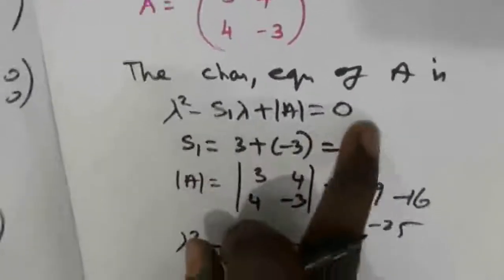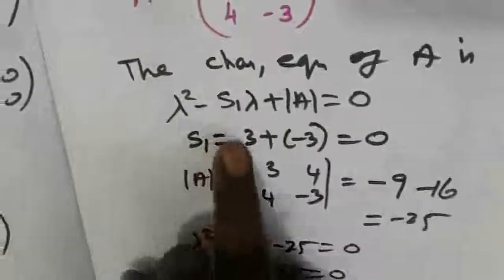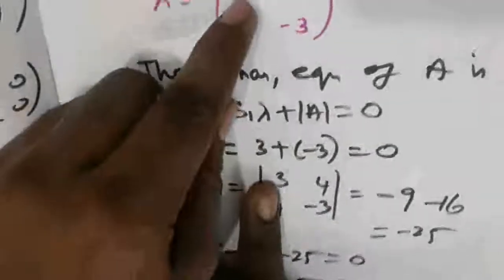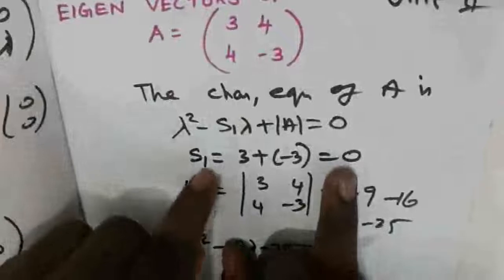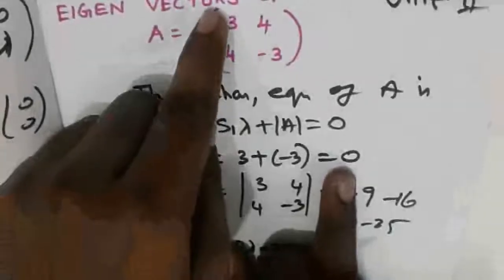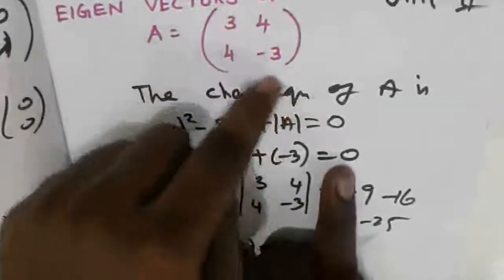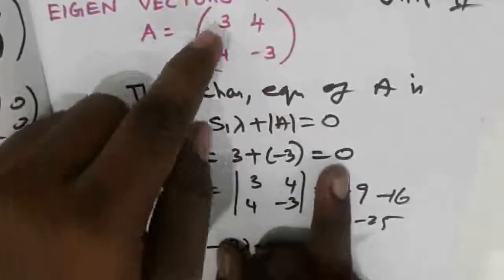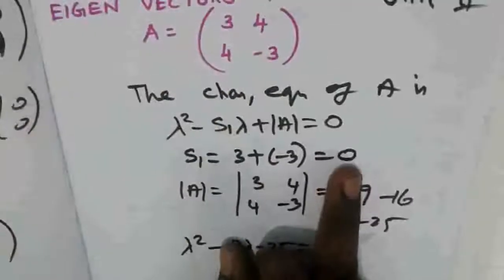We need to add the diagonal numbers — the sum of the leading diagonal numbers. So S1 equals 3 plus (-3), which gives us zero.